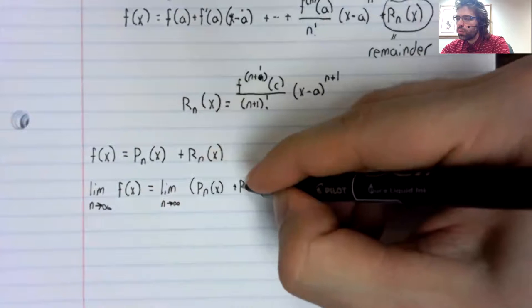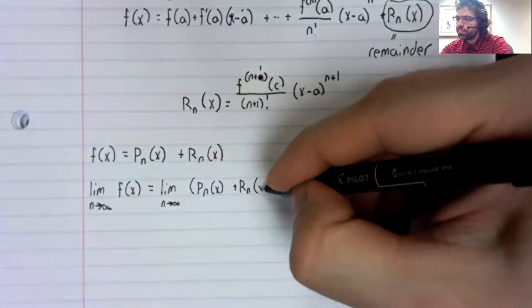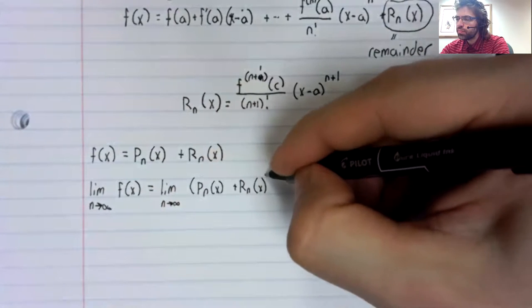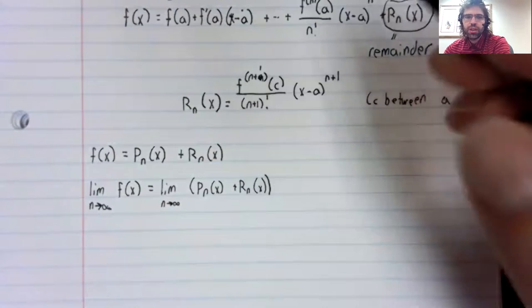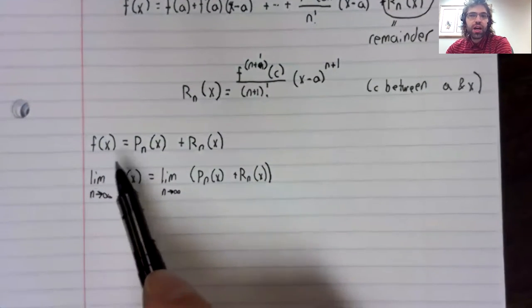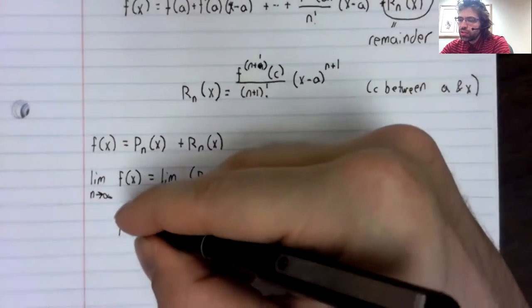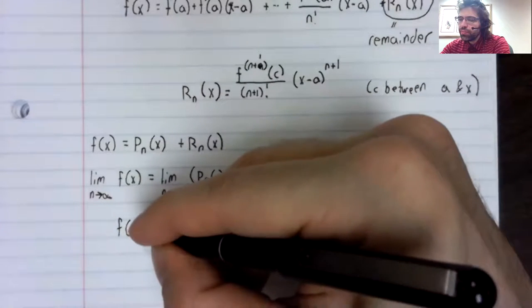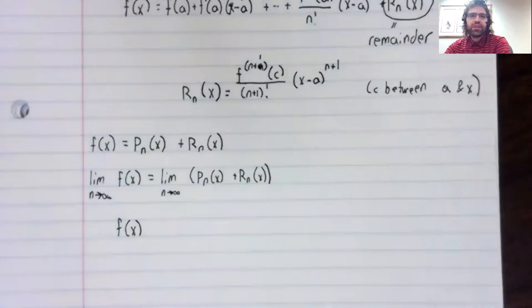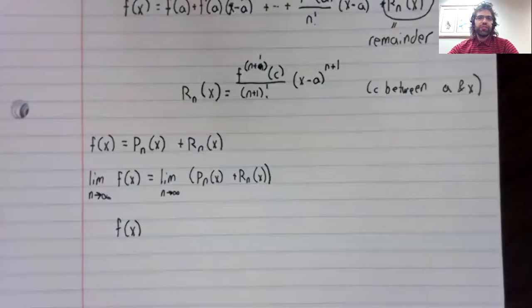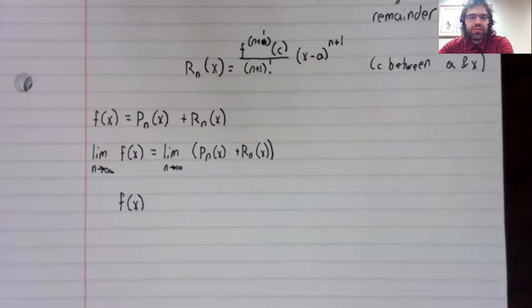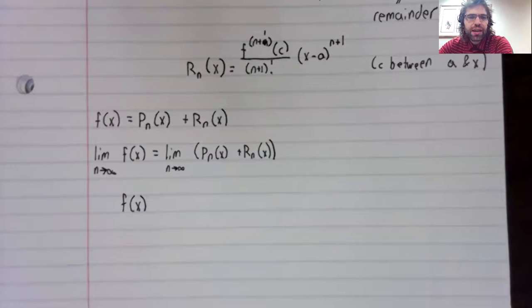Of this equality. On the left hand side there aren't any n's, so taking the limit as n approaches infinity doesn't do anything. We still have f of x.